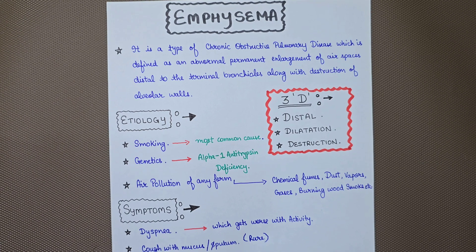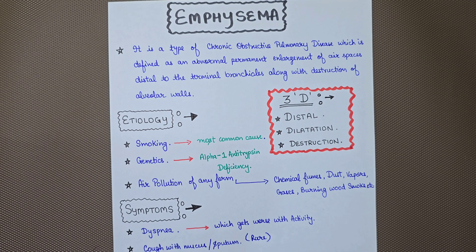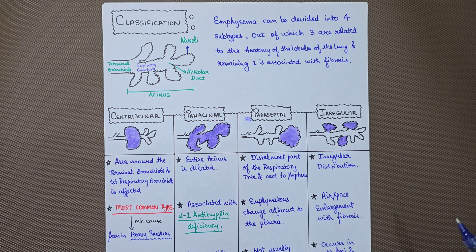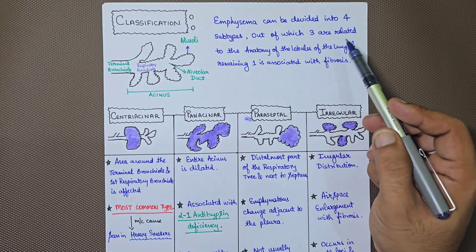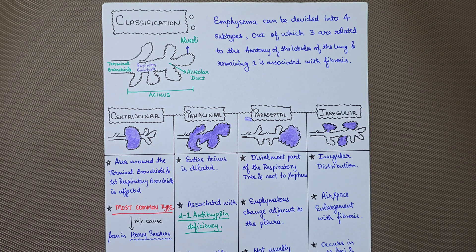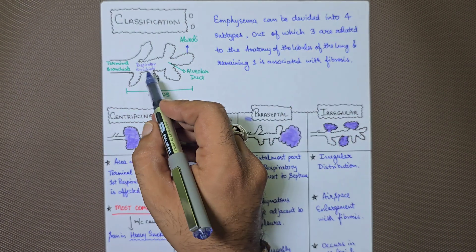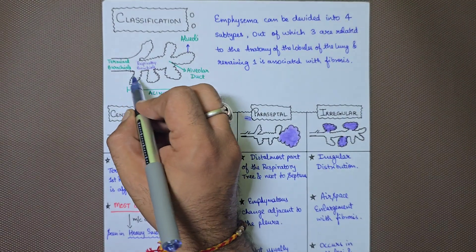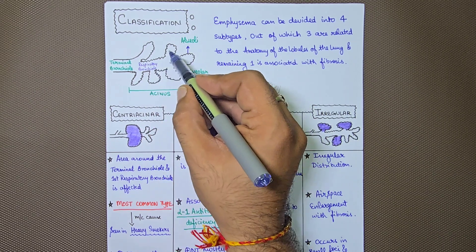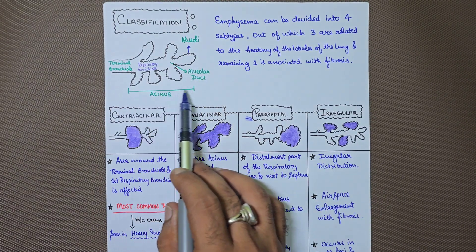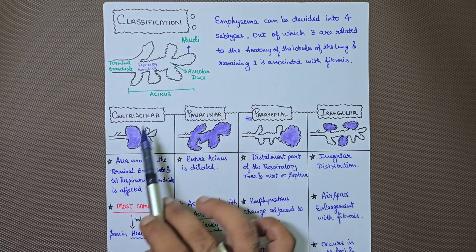Now let us look at the classification of emphysema. Emphysema can be divided into four subtypes, of which three are related to the anatomy of the lobules of the lungs, and the remaining one is associated with fibrosis. Looking at a diagram with the terminal bronchiole, respiratory bronchiole, alveolar duct, and alveoli — this entire area is the acinus — we can understand all four types of emphysema.